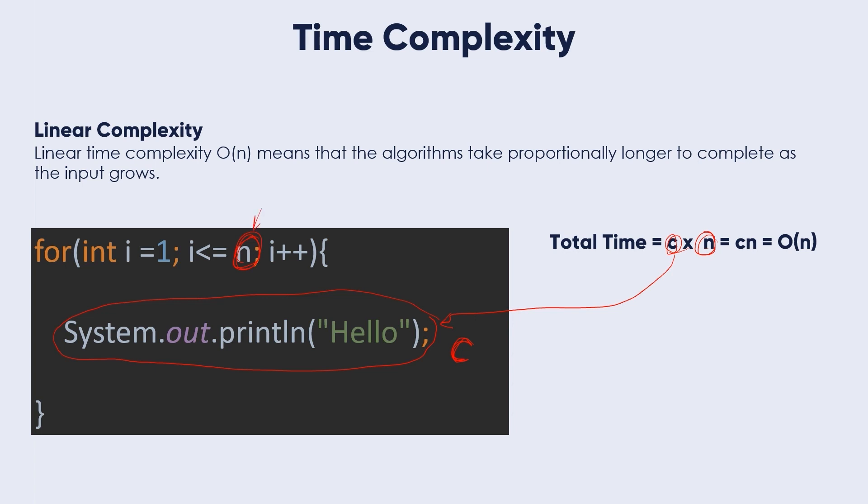If I enter 10, it will be executed 10 times. If I enter 1 million, it will be executed 1 million times. It depends on the n value.